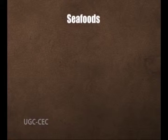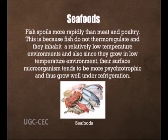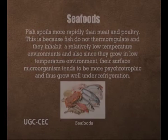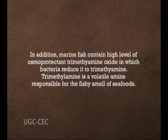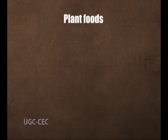Seafoods: fish spoils more rapidly than meat and poultry. This is because fish do not thermoregulate and inhabit relatively low temperature environments, so their surface microorganisms tend to be more psychrotrophic and thus grow well under refrigeration. Marine fish contain high levels of the osmoprotectant trimethylamine oxide, which bacteria reduce to trimethylamine — a volatile amine responsible for the fishy smell. Rapid microbial breakdown of proteins and amino acids also leads to foul-smelling amines and sulphur compounds such as hydrogen sulfide and dimethyl sulfide.